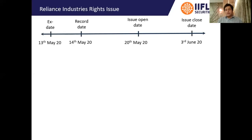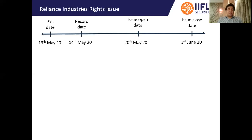A lot of investors get confused about how many shares they are entitled for, because they don't remember what they had bought before the record date versus after. So there are two ways to find out how many shares you are entitled to in this rights issue. One is to simply look at your DMAT account, because based on the existing shareholders as on the record date, rights entitlements would have been credited to their DMAT accounts.